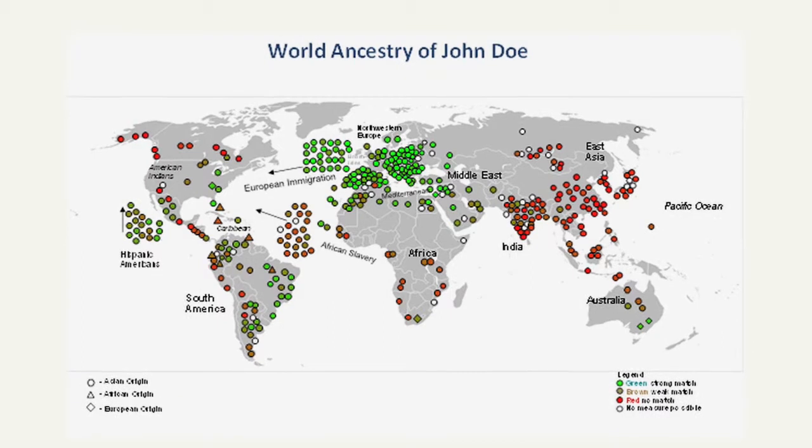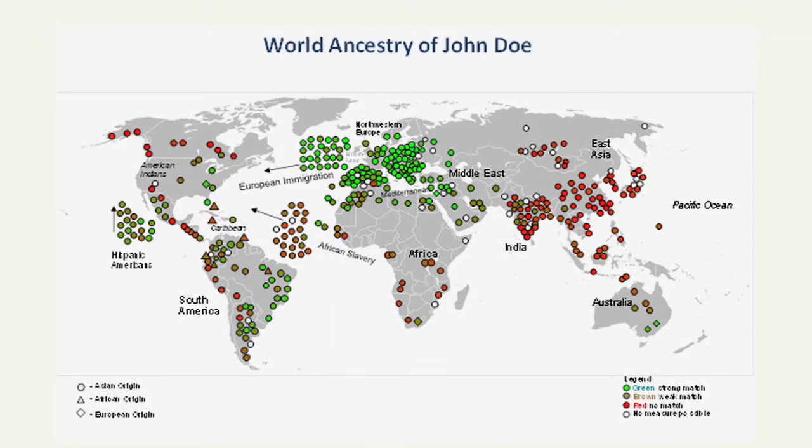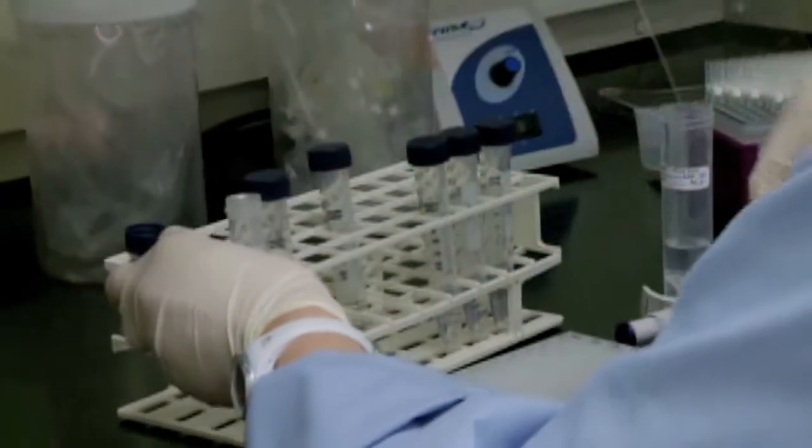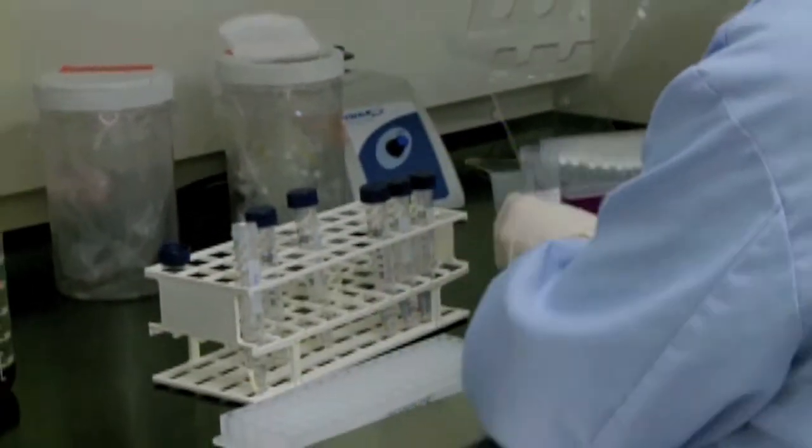You get a map showing the countries of the world where your ancestors all originated, lists of your top matches to populations, not persons, but populations including the top ten countries in Europe and all possible ethnic groups.